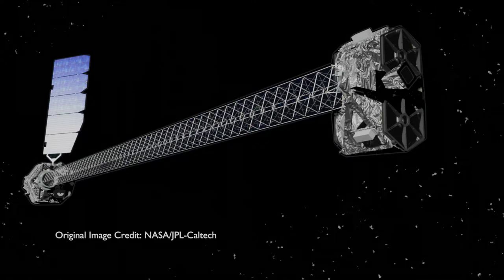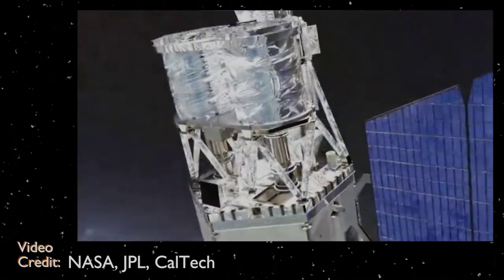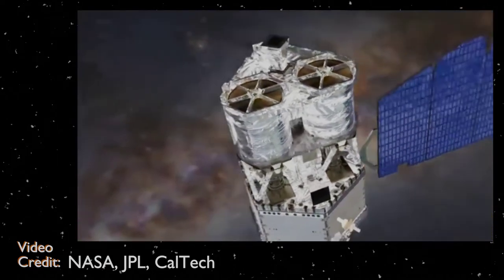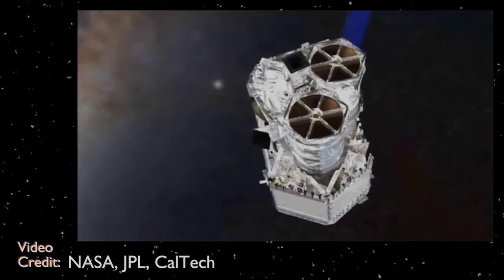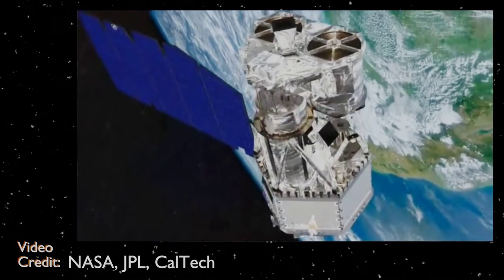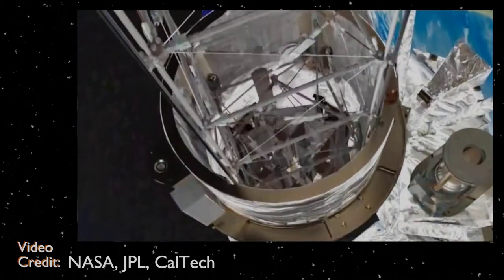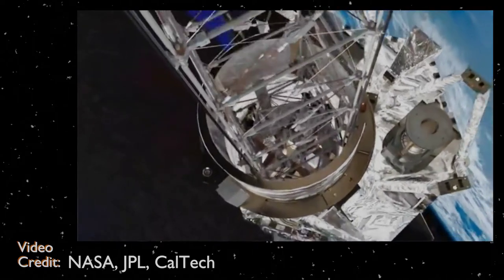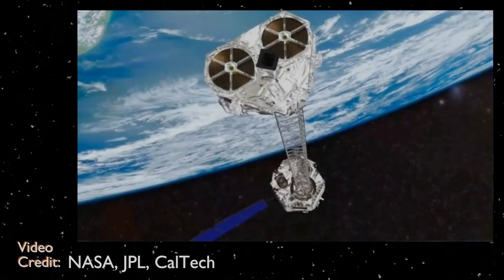To gather this high-quality of data, NuSTAR required a 10-meter focal plane length, which provided some engineering issues. Launching a 10-meter payload would be particularly difficult, so engineers used a deployable mast system, which once the payload reached its 600 kilometer near circular orbit at a 6-degree inclination angle, the mast would deploy, giving the required 10-meter focal plane length for its two telescopes.